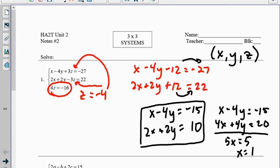I then substitute that back in, and I get 1 minus 4y equals negative 15. I subtract the 1 over, I get negative 4y equals negative 16, and I figure out that y equals 4.